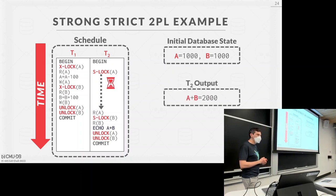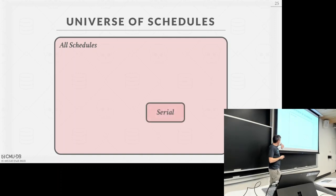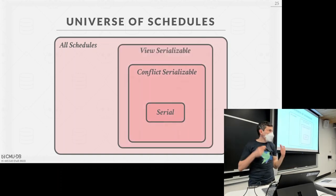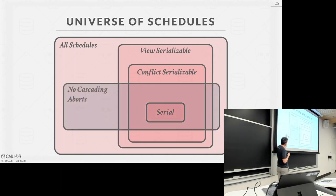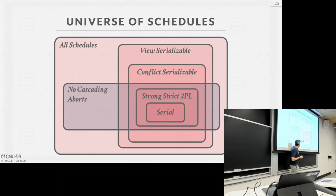Visually, this represents the universe of all possible schedules. Within that are serial orderings, then conflict serializable, then view serializable. We also have schedules with no cascading aborts. Strong strict 2PL falls within no-cascading-abort schedules, and any schedule generated by strong strict 2PL is conflict serializable, and therefore also view serializable. As you move closer to the serial region, there's less parallelism available in the database system.